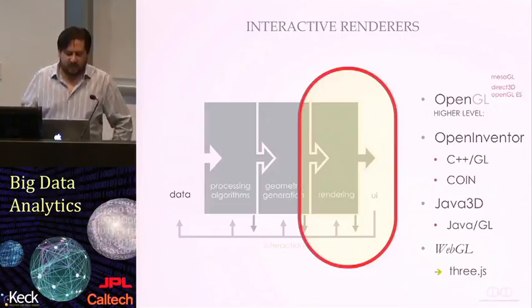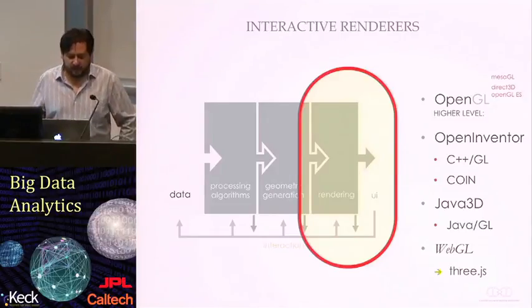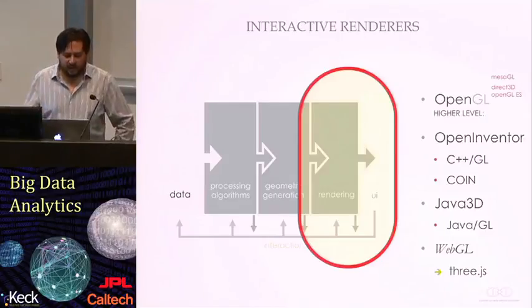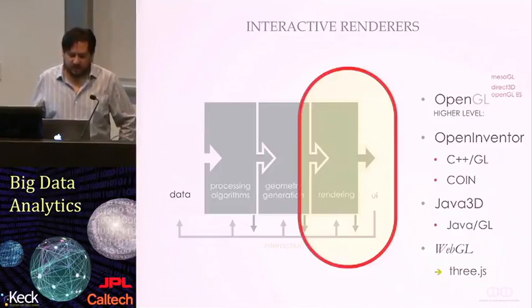Same as the higher languages we were talking about before, Open Inventor and Java 3D, there is an API, a package, that lets you take a higher approach to GL programming within the web, within JavaScript, called Three.js.